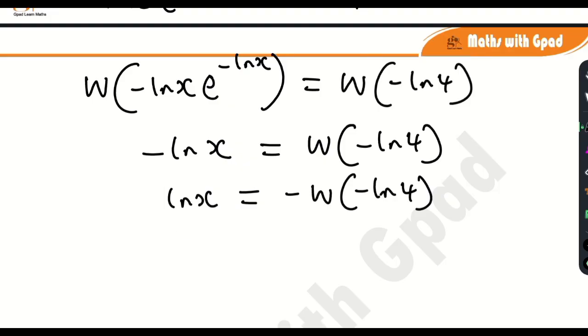What am I going to do? I am going to apply e to both sides. Remember I told you that ln and e are inverse functions. So for us to remove this natural logarithm, I will have to apply e to both sides. So I will have e to the ln x is equal to e raised by minus W in bracket minus ln 4.